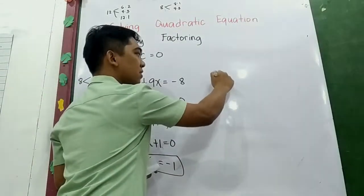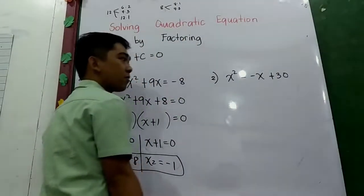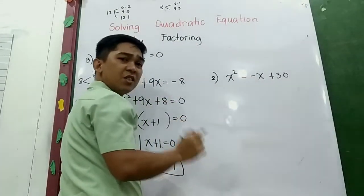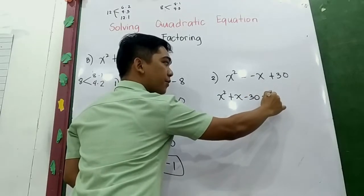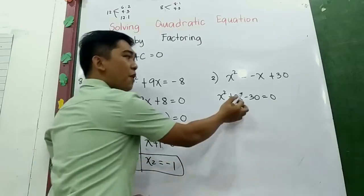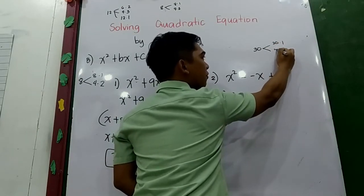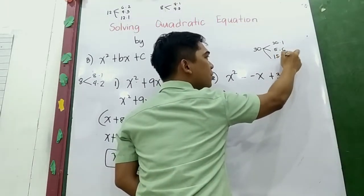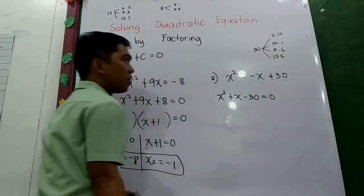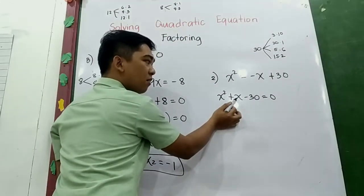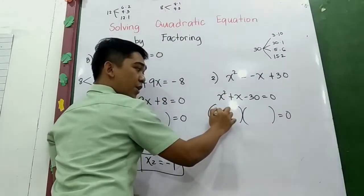Another example using the second technique: x² = −x + 30. Transpose to write in standard form: x² + x − 30 = 0. Now factor out. Get the factors of 30 whose sum must be 1.